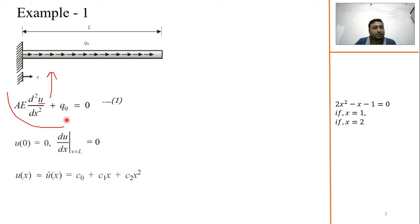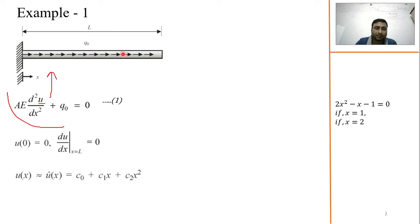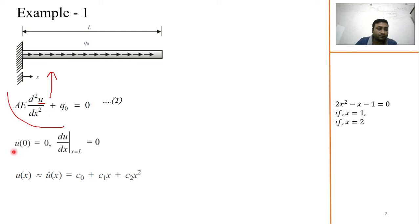To solve this differential equation — we call it the governing differential equation — equation 1 is a second-order equation: d²u/dx², subjected to two boundary conditions. The first boundary condition is u at x = 0 is 0, and the second is the first derivative at x = L equals 0.